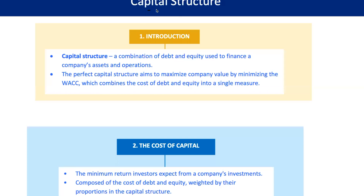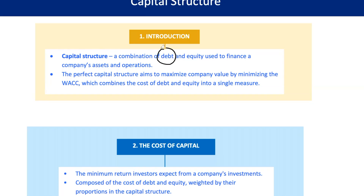Capital structure is the backbone of corporate finance. What's it all about? Imagine you're running a business. You need money to get things going — buying inventory, paying salaries, expanding operations, and so on. This money can come from two main sources: debt and equity.